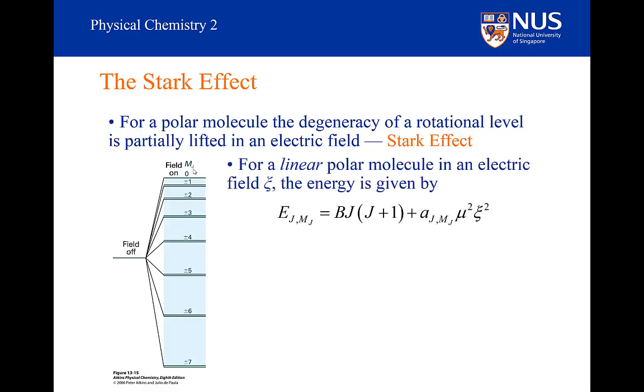One of the reasons why this is quite useful is that the energy of my level now depends on both my j level and the Mj level. So the rotational energy is equal to B times j into j plus 1, as before, plus it's got this additional term here. And this additional term depends on the electric field strength and also the dipole moment, plus this parameter that depends on the j quantum number and the Mj quantum number of the system.